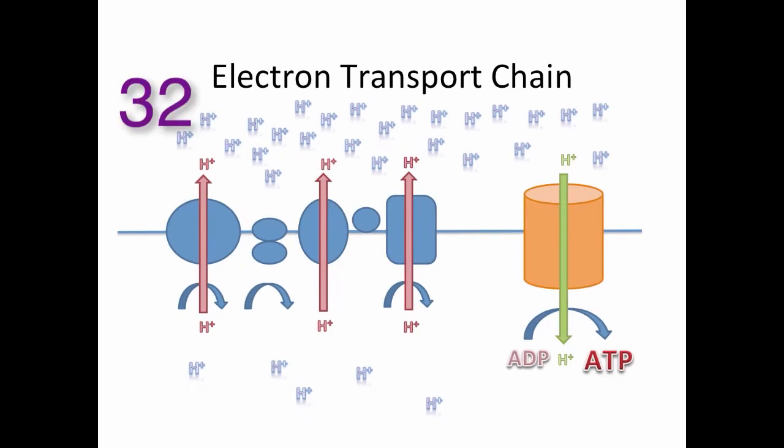And so, assuming that 32 protons get transferred up into the intermembrane space, that means that 32 protons will transfer back through the ATP synthase, creating 32 molecules of ATP.